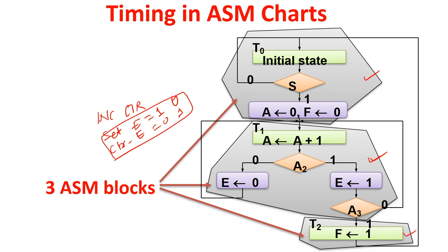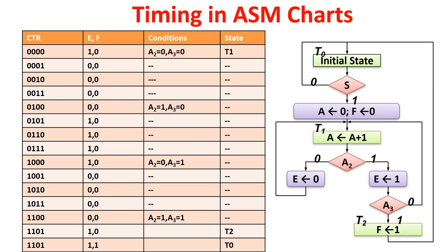Because these things happen in the same clock cycle and at the same time, the value of A2 is not from the same clock cycle — it is from the earlier clock cycle. Let us see the timing diagrams. Initially counter is 0 (0000), and E and F values are set. This is T0 — the initial conditions.